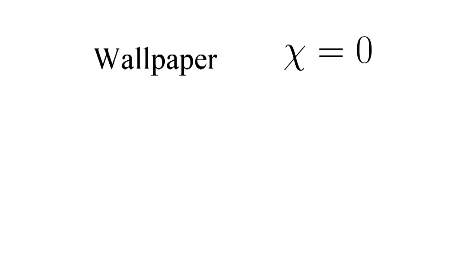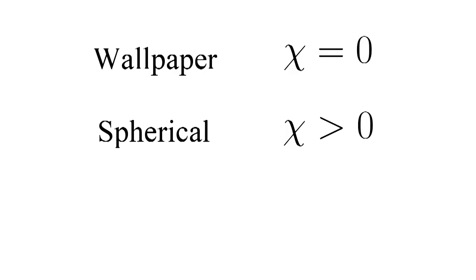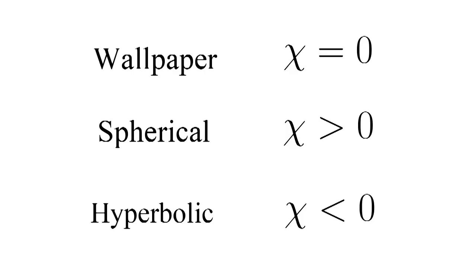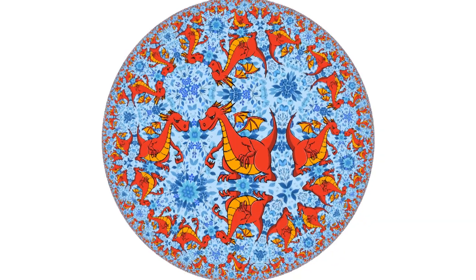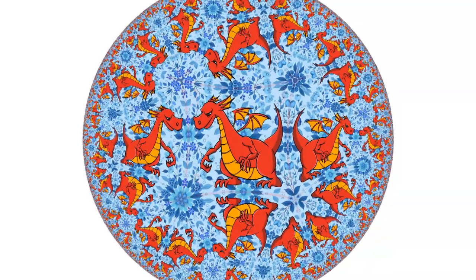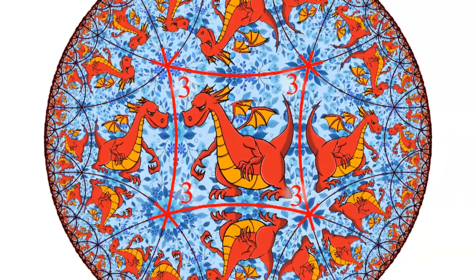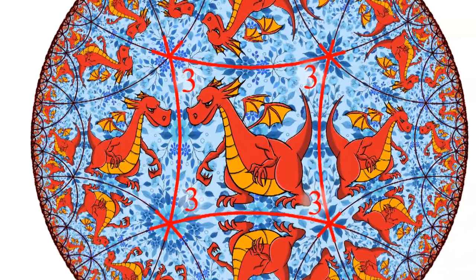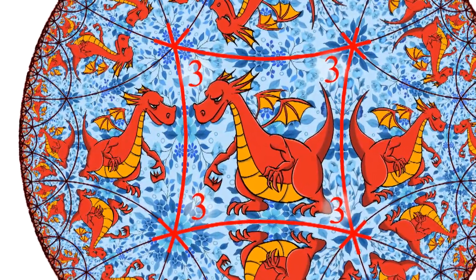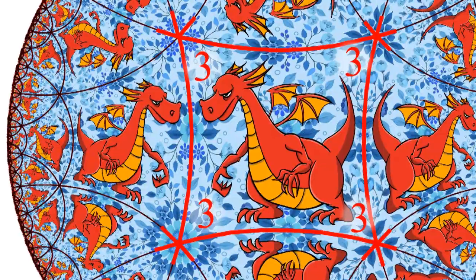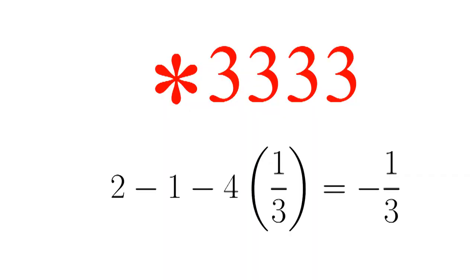In these 17 examples, the characteristic is zero. For spherical symmetries, the characteristic is above zero. If the characteristic goes below zero, it can be used in a special kind of geometry called hyperbolic geometry. We can see it in this image — if we show the reflections, we can see that we have a three-way reflection at each of these corners. There are four corners to the orbifold, giving us the symmetry star-three-three-three-three, which has a characteristic of negative one-third. That works fine in hyperbolic geometry.